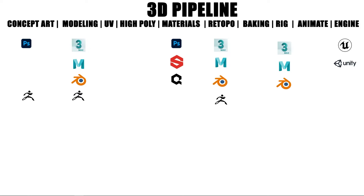The modeling phase actually has different parts: there's low poly, there's high poly, there's unwrapping, and things like that. You could also lump in materials as well. Materials is basically your texture generation, retopology.